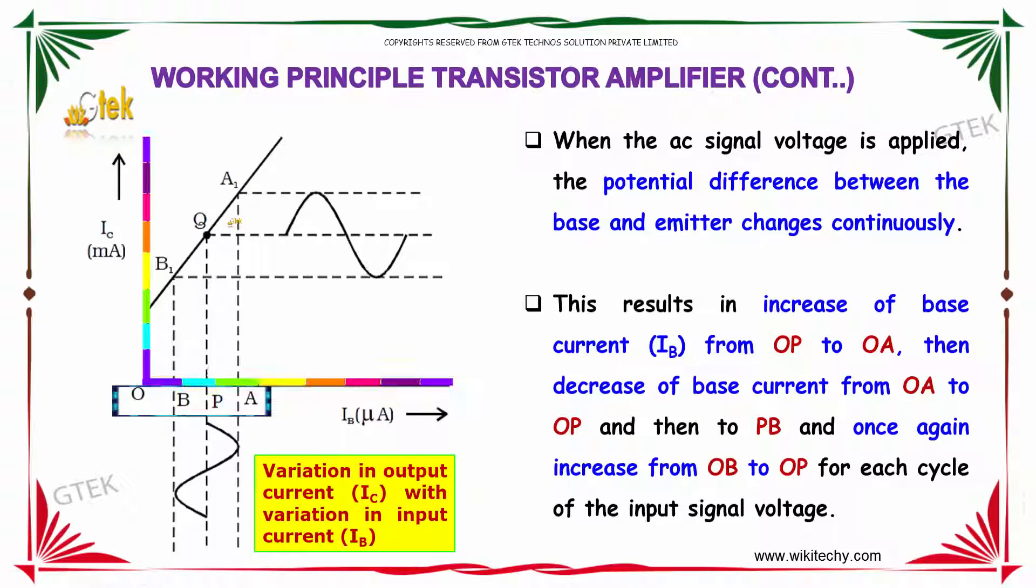When the AC signal voltage is applied, the potential difference between the base and the emitter changes continuously. This results in the increase of the base current IB from OP to OA.